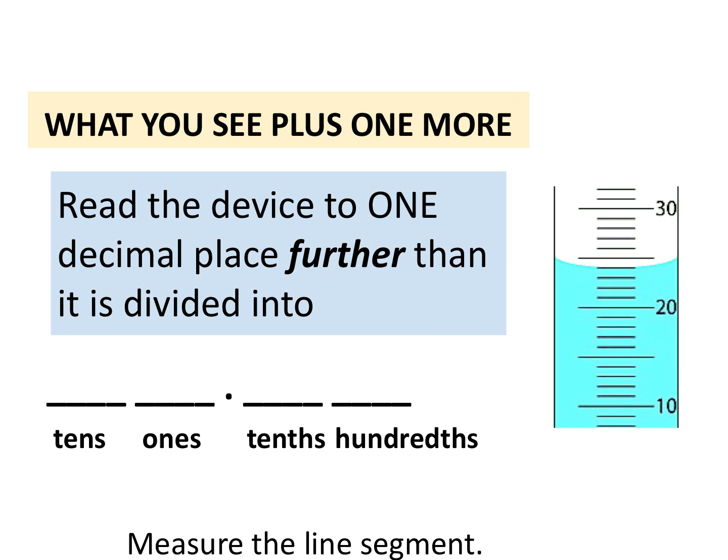Before we can get into what sig figs are exactly, we need to talk about measurements that are made in the lab. Measurements that are made in the lab are always what you see plus one more. We have estimated digits or uncertainty included in these numbers because of human error, or I might see it differently than how my partner sees.